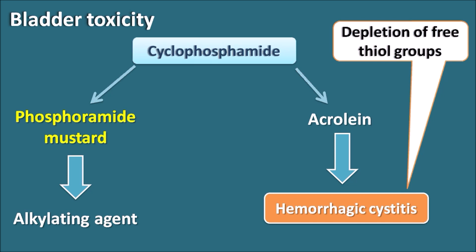Since acrolein depletes the thiol groups, we can externally supply thiol groups in the form of mesna. Mesna can inhibit the hemorrhagic cystitis caused by acrolein, one of the important metabolites of cyclophosphamide.